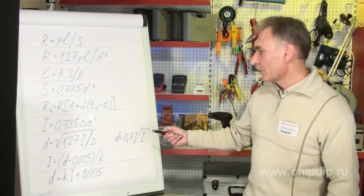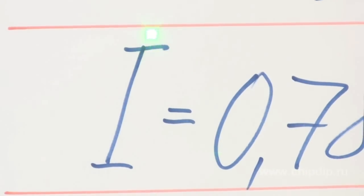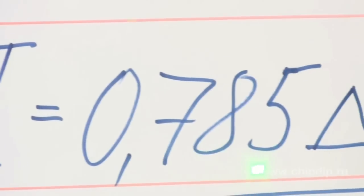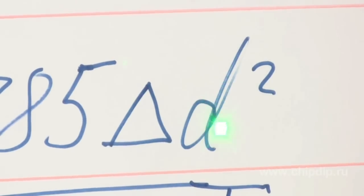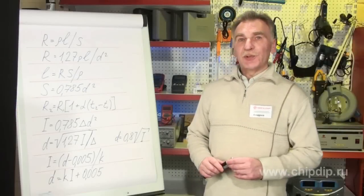We calculate the current capacity at the state standard current density, A divided by square millimeters, using the following formula: I equals 0.785D squared.